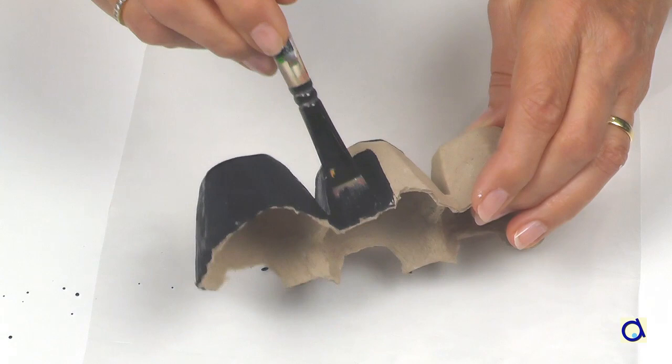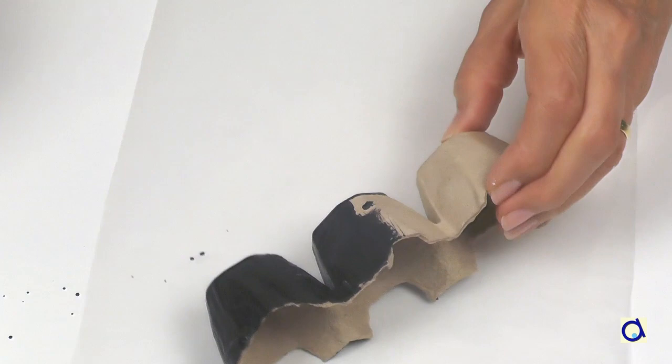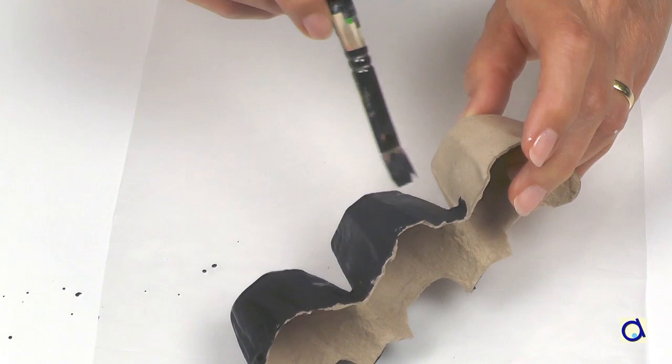The three cells of the egg carton will form the body of the ant. The three cells will thus represent the head, the thorax, and the abdomen. Let the paint and varnish dry well.